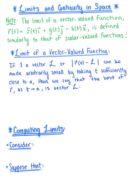Here we are exploring limits and continuity in space, or in three dimensions. The limit of a vector-valued function defined as vector r(t) equals f(t) times unit vector i plus g(t) times unit vector j plus h(t) times unit vector k is defined and evaluated similarly to that of scalar-valued functions.